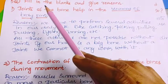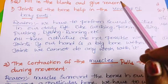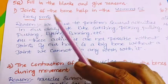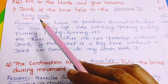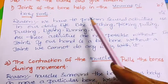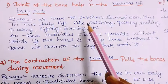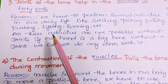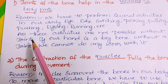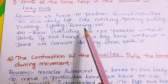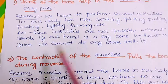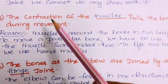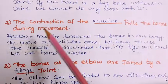Fifth question has fill-in-the-blanks with reasons. First blank: joints of the bones help in the movement of body parts. We perform several activities in daily life like catching, picking, pulling, pushing, lifting, and running — all these activities are not possible without the joints. Hence joints are necessary. Second blank: the contraction of the muscles pulls the bones during movement — muscles surround the bones in our body, and to move a particular bone we use the surrounding muscle.